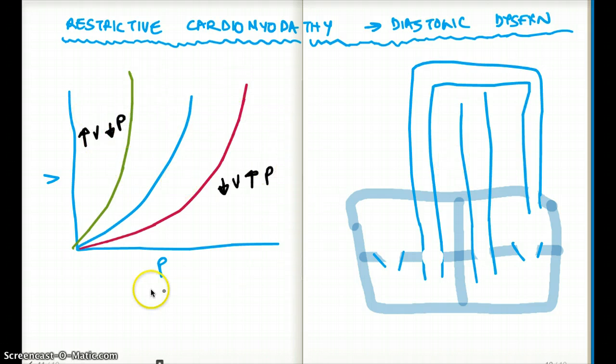So this graph really deals with the equation of compliance. Now compliance is equal to delta V by delta P. When the pressure is increased, the compliance decreases, which is happening in this graph. When the pressure is increased, compliance decreases and the volume also decreases.